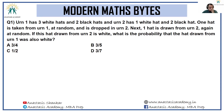Let's look at the modern maths byte video for the first day. Urn one has three white hats and two black hats, and urn two has one white hat and two black hats. One hat is taken from urn one at random and dropped into urn two. Next, one hat is drawn from urn two at random. If this hat drawn from urn two is white, what is the probability that the hat drawn from urn one was also white? This is a question under the topic called conditional probability.